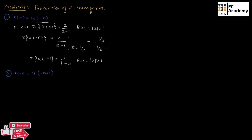Let us see the second problem where X of n is given as U of minus n plus 1. For this problem, let us make this equation similar to U of minus n. We write X of n as U of minus of n minus 1, taking minus as common. Here we can make use of two properties. First, we know the Z-transform of U of minus n gives us 1 divided by 1 minus Z, as understood from the first problem.